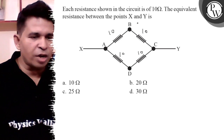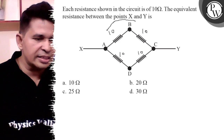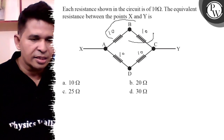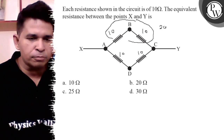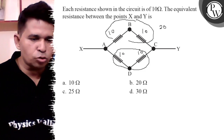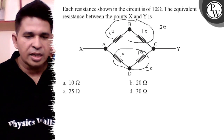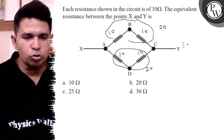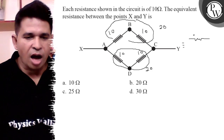These two ten ohm are in series, so it is 20 ohm. These two are also in series, so it is 20 ohm. Now, these two 20 ohm resistors are in parallel.